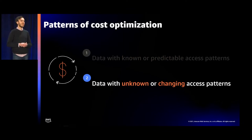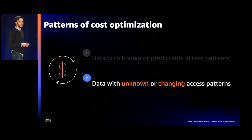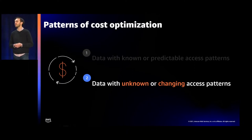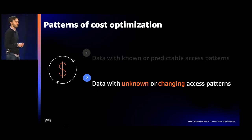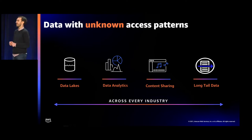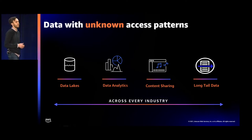But what if you have data with unknown or changing access patterns? For use cases like storing shared datasets where data is accessed by several different applications, it's common that many users within an organization will access S3 with different tools. These access patterns are highly variable — ranging from no access to being accessed multiple times in a single month or even in a single day — which could result in higher retrieval charges if stored in a class optimized for infrequent access. The vast majority of data today has unknown, changing, or unpredictable access patterns. Data lakes and analytics are really good examples.